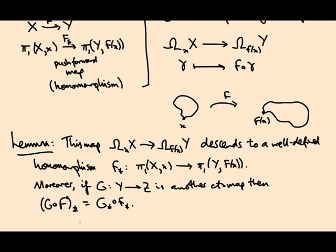So this is actually clear on the level of loops. Just on the level of loops, this is saying g composed f composed gamma equals g composed f composed gamma. And this is just associativity of composition. So this second fact follows as soon as you see that this map on loops descends to a map on fundamental groups.